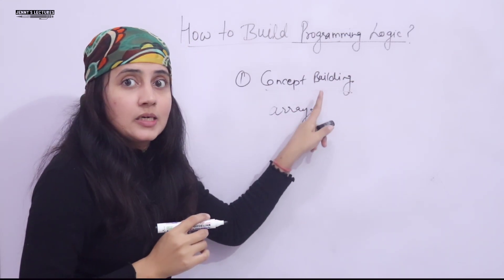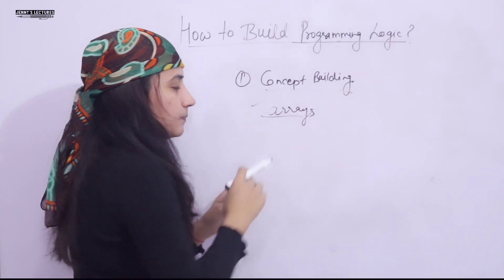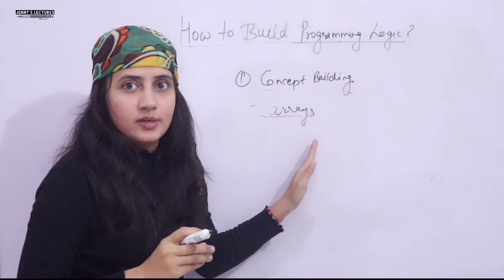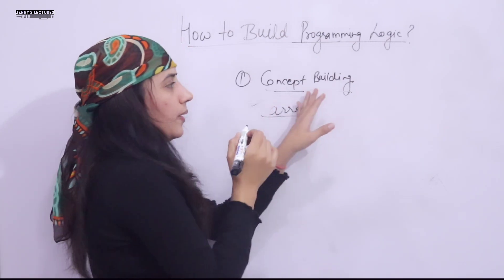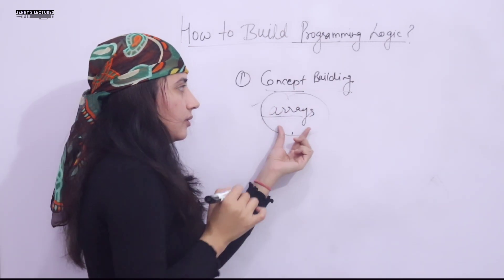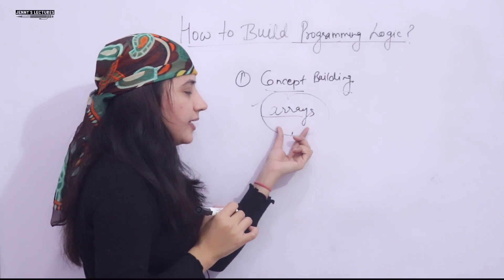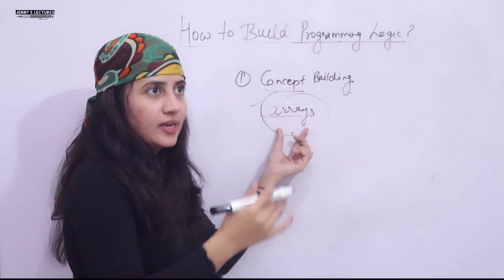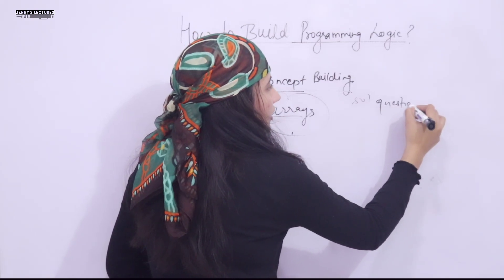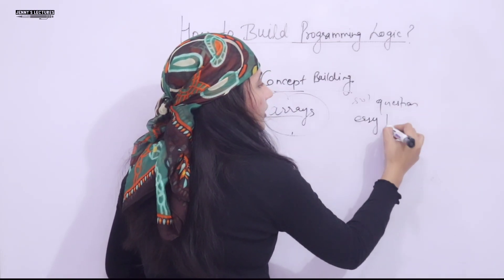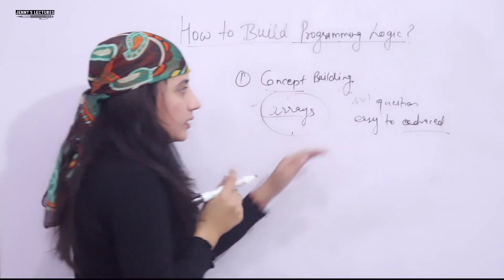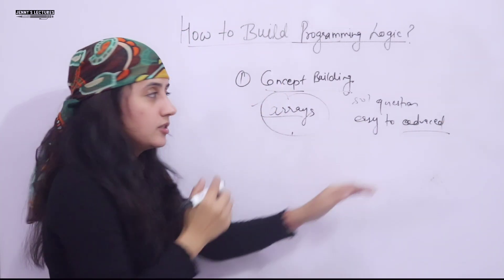Just pick one topic like arrays, read it from a genuine resource, and apply active learning. Read the concept of arrays properly — 1D arrays, applications of arrays — then start solving questions on that topic. And move from easy to advanced: easy questions first, then advanced. This is the second mistake students generally make — they skip easy questions.